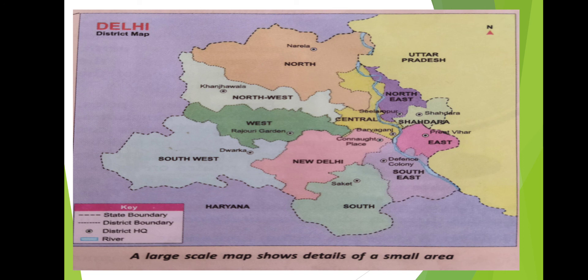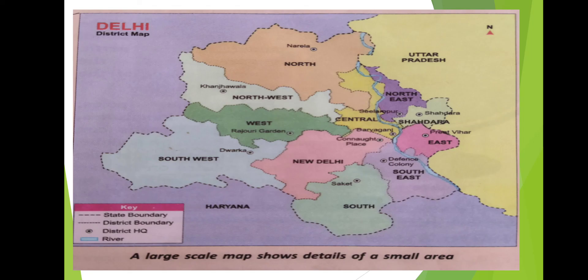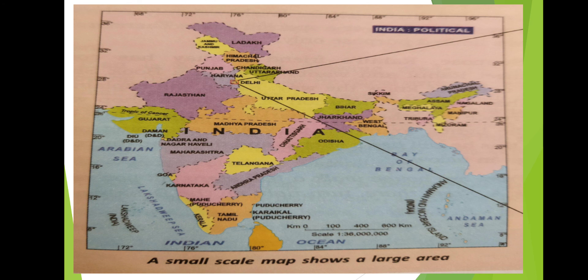Along with that, you can note this key point: for example, state boundary and district boundary are given, and these key points are helpful for people to identify particular places. With this, I am going to end this chapter. In the next video, I will be discussing the remaining part. Thank you for watching — we will see you in the next video.